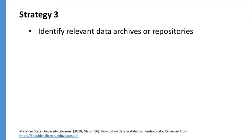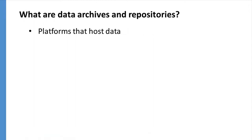The third strategy is to identify relevant data archives or repositories. Data archives and repositories are platforms that host data. Usually the platform is not the party that collected the data — they are just making it available for others. Some repositories host data across disciplines and institutions, while others only include datasets that are related to each other in some way.